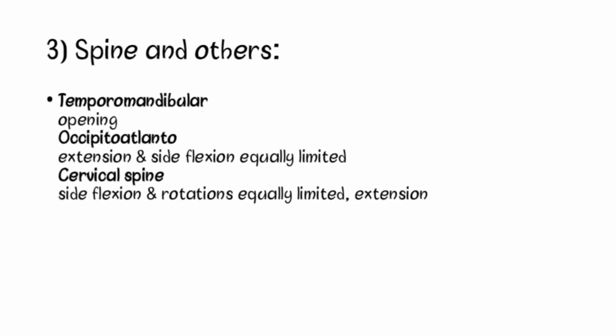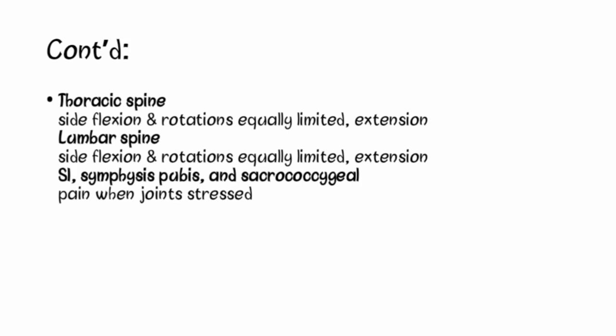For the spine and other joints: at the temporomandibular joint, opening is restricted. At the occipital-atlantal joint, extension and side flexion are equally limited. In the cervical spine, side flexion and rotations are equally limited, with extension being less limited. This same pattern is followed by the thoracic spine and lumbar spine as well.